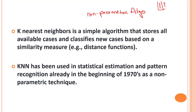Next, KNN is a lazy learner. When we started learning about machine learning, we talked about the term 'lazy learner.' Why is KNN a lazy learner? Because it does not learn from the training set immediately. Instead, it stores the dataset, and at the time of classification it performs an action on the dataset.